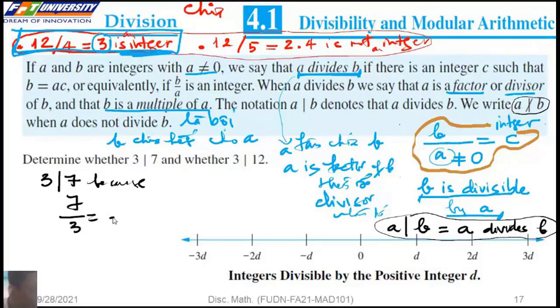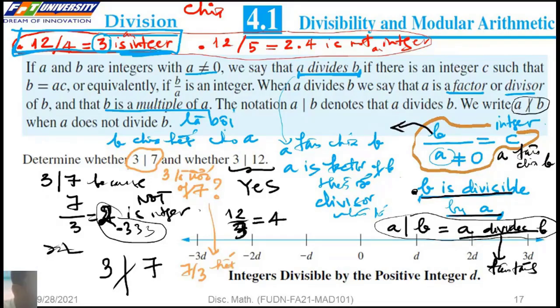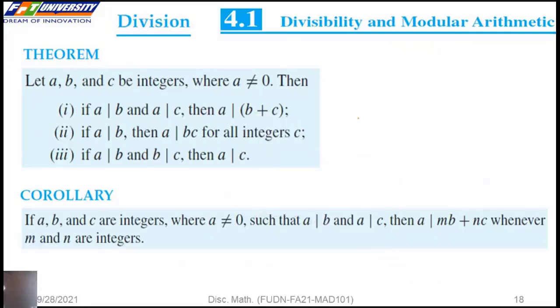Because 7 divided by 3 equals 2.3, the result is not integer. So we have 3 does not divide 7. And here, yes, because it's part.